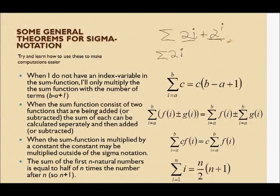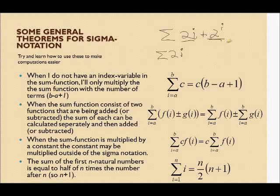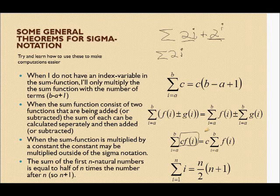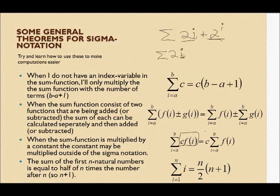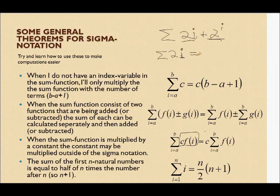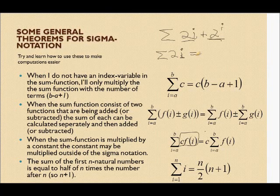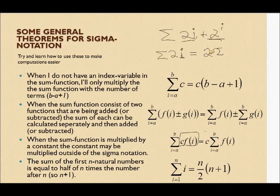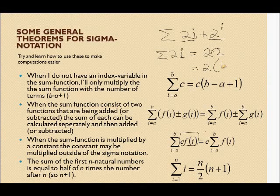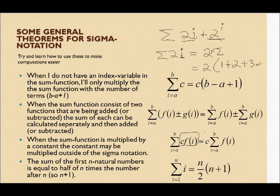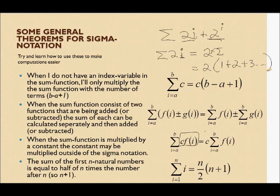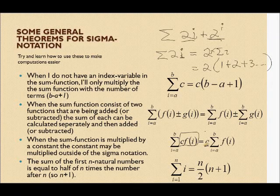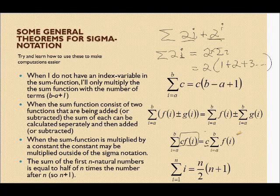Then we have that if I have the sum of some function, but that function of i is multiplied by a constant. So for example, this i is being multiplied by 2. That 2 is going to be a common factor in every term, because every term is going to be multiplied by 2. So I might as well take them out of the sum and multiply them in front of the sum. So that in the end I'll have 2 times 1 plus 2 plus 3. Instead of multiplying every term while I'm calculating it, I can multiply it at the end. So it means that I can take out any constant that is being multiplied with my function.